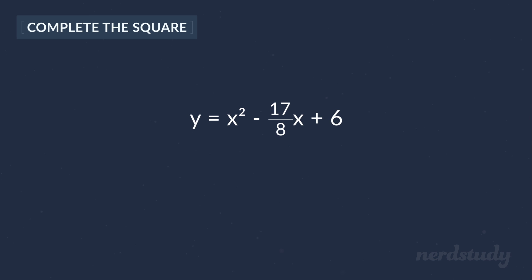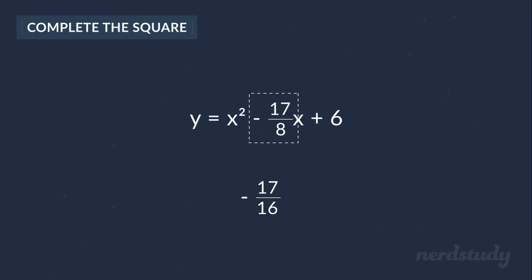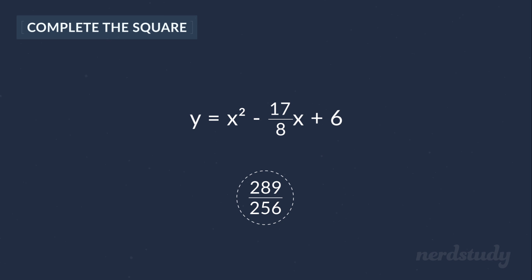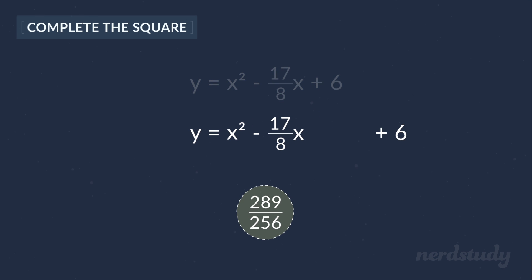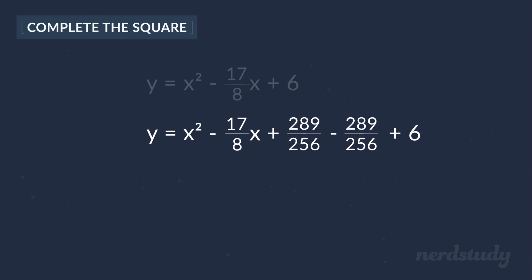How would we complete the squares for a question like this? You should do the exact same thing as you did before. Take this number and divide it by 2 to get negative 17 over 16, and then square it to get 289 over 256. There's our number — there's no need to freak out about this number. We just need to use it like we did with our easy example. Add and subtract the equation by that number.